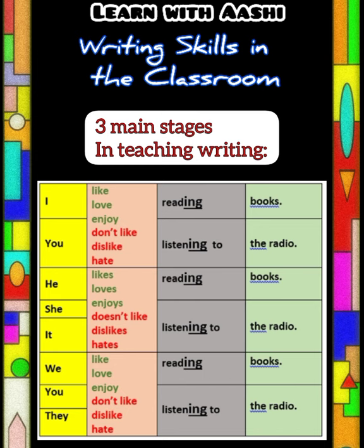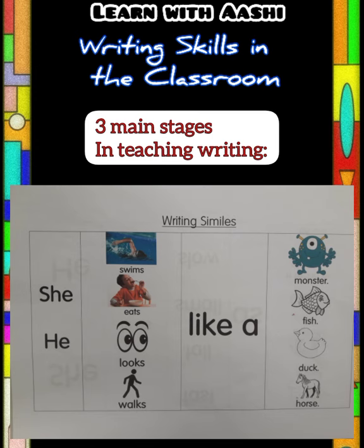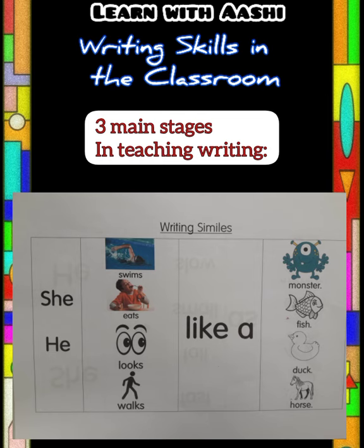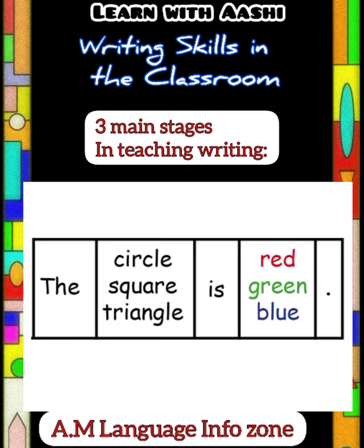In substitution tables, you change choices within a sentence structure. For example, if 'he' is used at the start of a sentence, the student can also choose to use a name. Accordingly, pronouns change — if 'he' is used, then 'him' or 'his' must follow; if 'she' is used, then 'her' must follow. Students are given choices for objects too — such as mango, apple, or banana. This is a substitution table, and we are teaching students to form sentences with varied items.